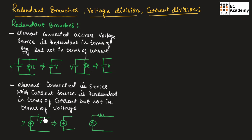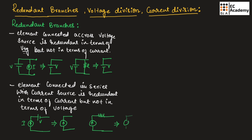The voltage source is redundant in terms of current, but not in terms of voltage, because we will have different voltages at the two points but the same current flowing. In the same way, if we consider this example, the resistor is connected in series with the current source. That's why this resistor will be redundant, so we can redraw the circuit and consider only the current source.